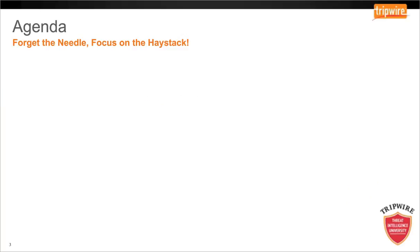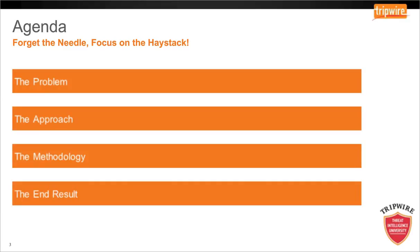Over the next 20 minutes or so, I'm going to talk about how most companies spend their time and money focusing on the events of interest — in other words, the haystack. My presentation is going to focus on four main topics: the problem companies are currently facing with regard to threats such as malware; the approach most companies adopt to try and mitigate the threat; the methodology they currently adopt to detect events of interest, as well as a possible alternate way to sift through the data; and finally, the end result, where with a few small changes in processes, could help reduce the noise or haystack.